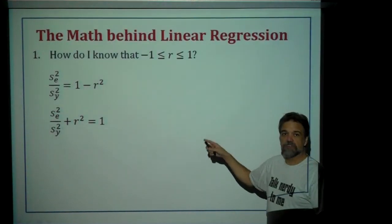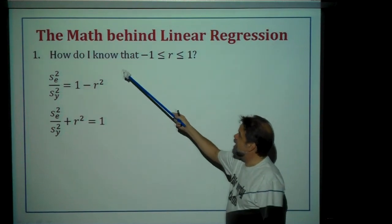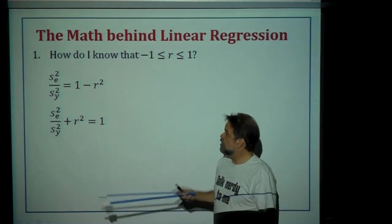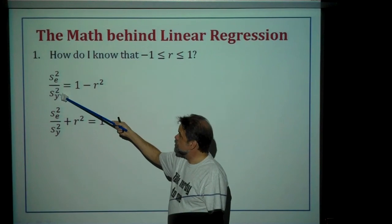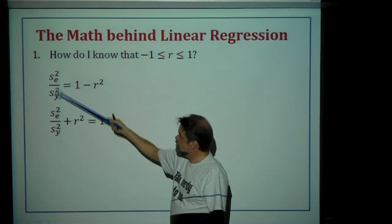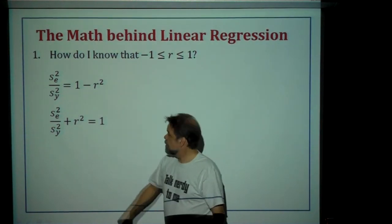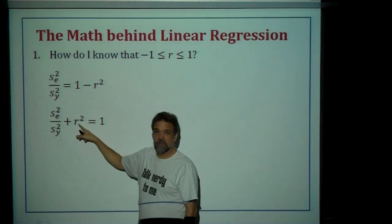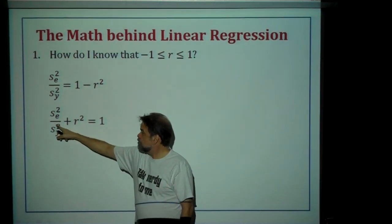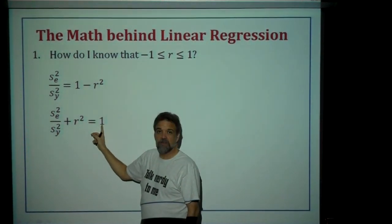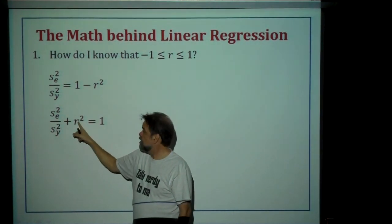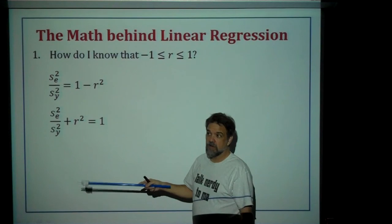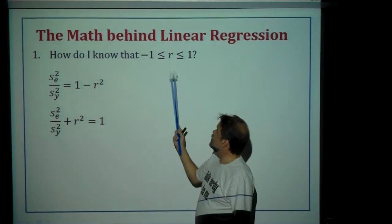Last question — which is actually the first question — how do I know that r is between negative one and one? The last proof we just did actually proves this as well. We said the ratio of these variances is one minus r-squared, which means this plus r-squared equals one. Variances are always positive, so the smallest this ratio can be is zero. r-squared is also always at least zero, so if a positive number plus a positive number equals one, both must be between zero and one. If r-squared has to be less than or equal to one, that means r has to be somewhere between negative one and one.